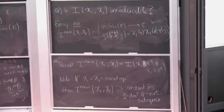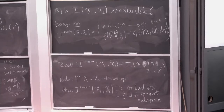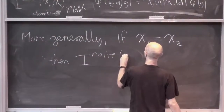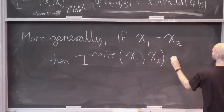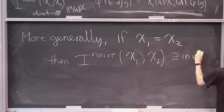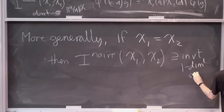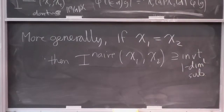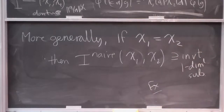That's what's happening here: if χ₁ equals χ₂ is the trivial representation, φ satisfies the equation but the characters are trivial and the fudge factor is gone, so φ of (something)·g equals φ(g). Then I_naive(χ₁, χ₂) contains the constant functions, and these are a one-dimensional G-invariant subspace. And more generally, if χ₁ equals χ₂, I_naive(χ₁, χ₂) contains an invariant one-dimensional subspace for the same sort of reasons.